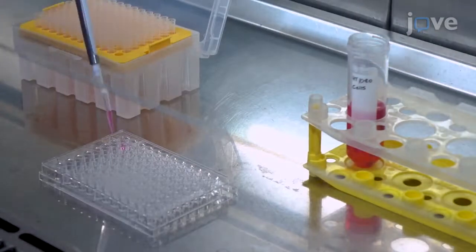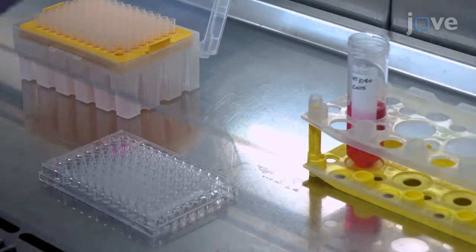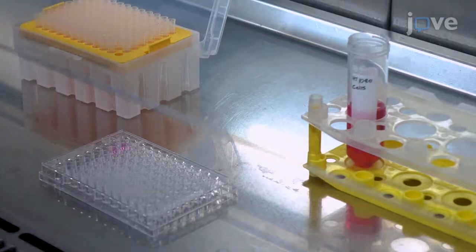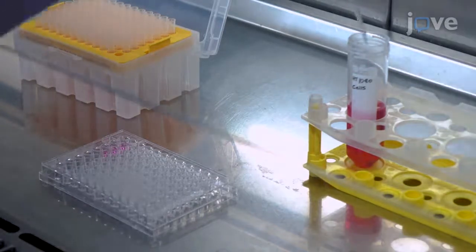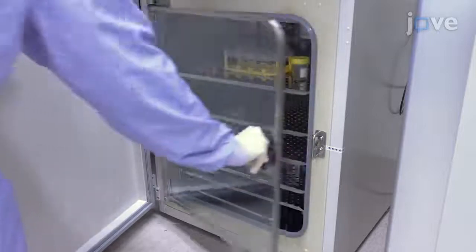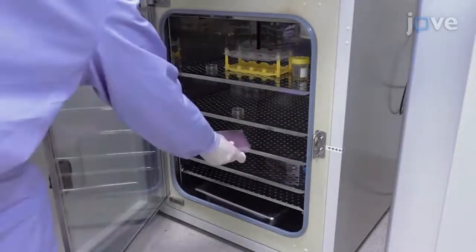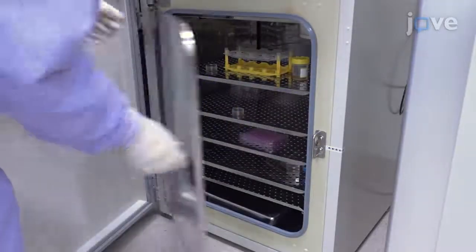Then seed 100 microliters of cells per well into clear 96 well flat bottomed plates to the concentration of 1 times 10 to the 4th cells per well. Incubate the plate at 37 degrees Celsius with 5% carbon dioxide overnight for 16 to 22 hours.